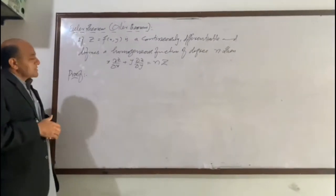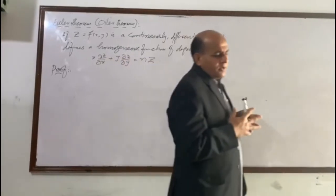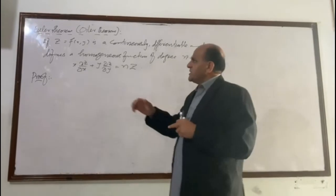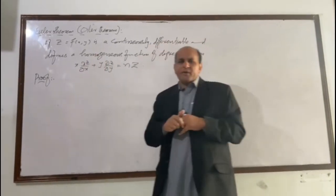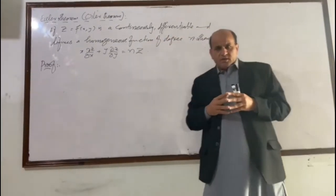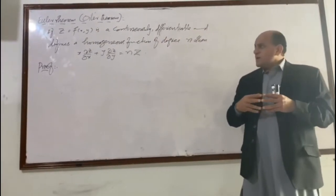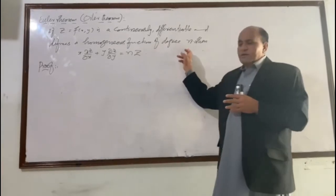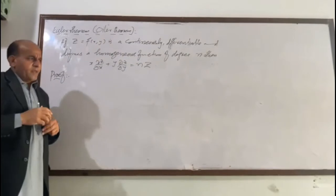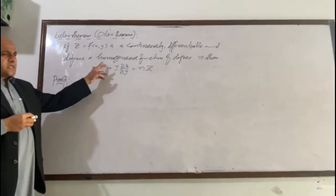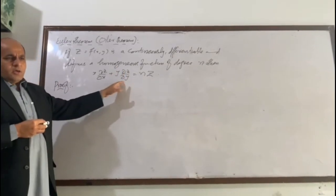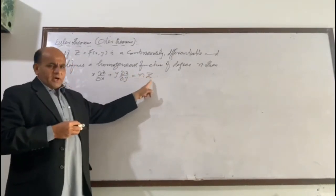Today we are going to discuss one of the important theorems of homogeneity, that is Euler's theorem. This theorem states that if a function z = f(x, y) is a continuously differentiable function and defines a homogeneity of degree n, then this function must satisfy the equation: x · (∂z/∂x) + y · (∂z/∂y) = n · z.